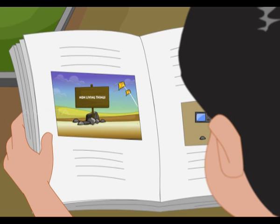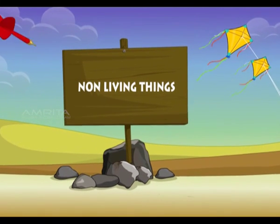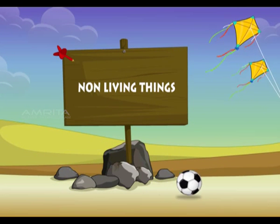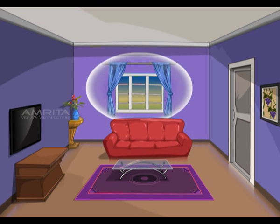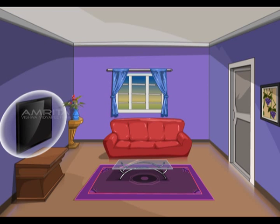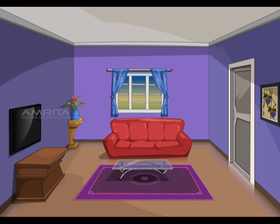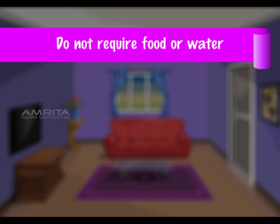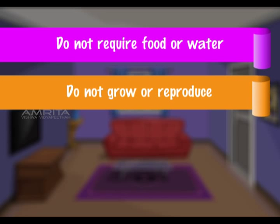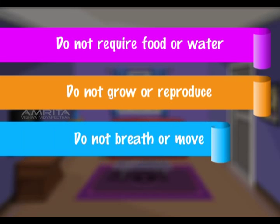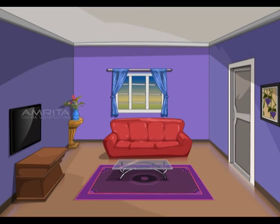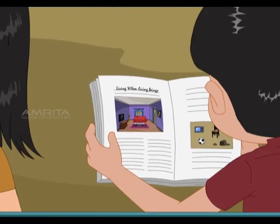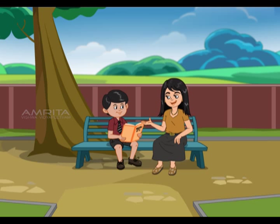Now what about non-living beings? In our house you have seen a table, chair, curtains, carpet, TV, vase with flowers — they are non-living beings. Because they do not require food or water, they do not grow or reproduce, and they do not breathe or move. They are any object we find around us. Importantly, they do not live.